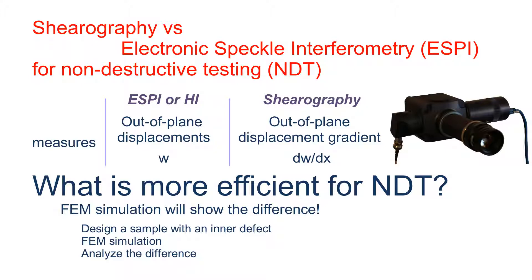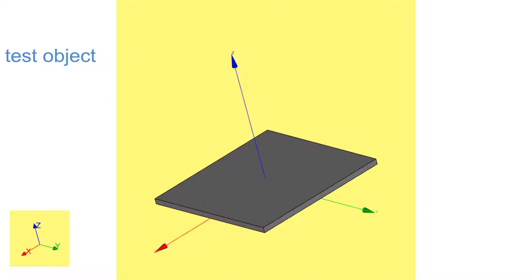After that, we analyze influence of the defect on results corresponding to shearography and electronic speckle interferometry methods. Let's build a sample with an inner defect.